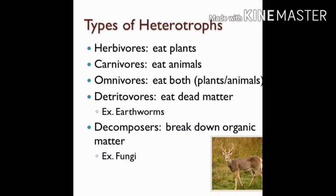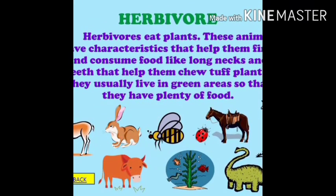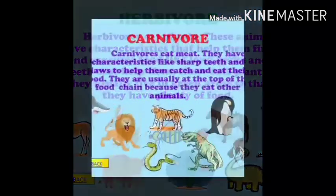Parasites are animals which depend on other animals for their food, for example mosquito and bug. They can live outside or inside the body of other organisms. Decomposers are living organisms which feed on dead matter — dead plants and animals. Fungi and bacteria are examples of decomposers.